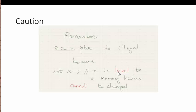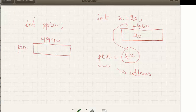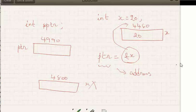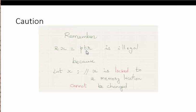One thing that is illegal is ampersand x equal to pointer. You have to know why: as we talked about in the beginning, we cannot change the address of x. If x is pointing to 4460, you cannot tell x to point somewhere else like 4800. So you cannot store an address into ampersand x to change the address of x — this is illegal.